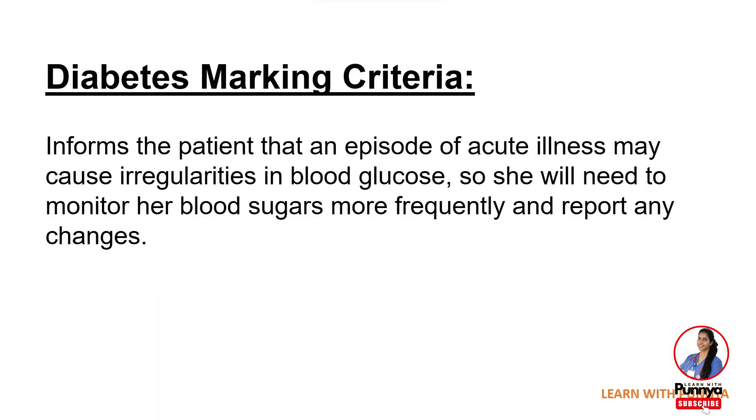Alert family and friends, and have emergency contacts ready. Inform the patient that an episode of acute illness may cause irregularities in blood glucose, so she will need to monitor her blood glucose more frequently and report any changes.